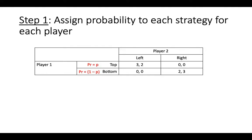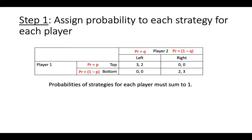Similarly, player 2 will play left with probability q and right with probability 1-q. Remember that the probabilities of the possible strategies for each player must sum to 1.